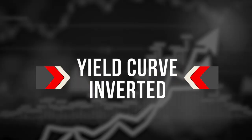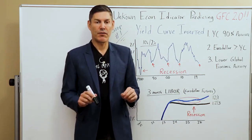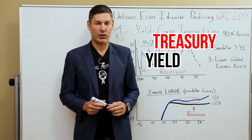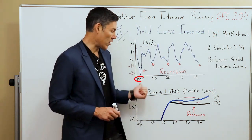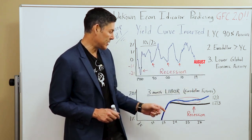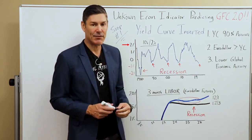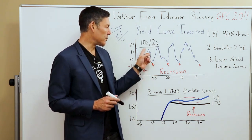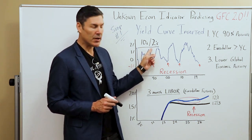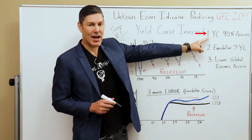Step number one: let's go over this recent event with the yield curve actually inverting. When most of you think of the yield curve inverting, you think of the treasury yield curve. So let's start there. We've got a chart going all the way back to 1980 to 2019 — this is August 2019. On the left, we go from negative 2% up to a positive 2%.